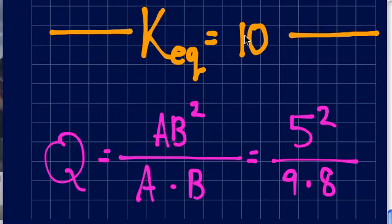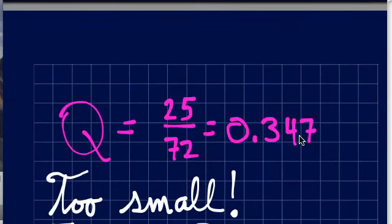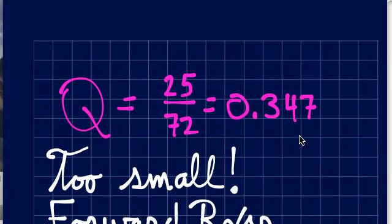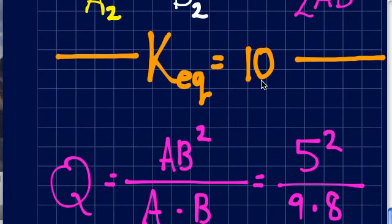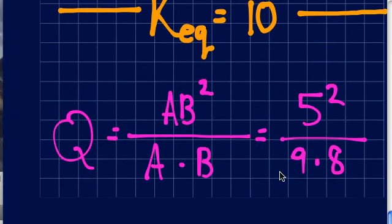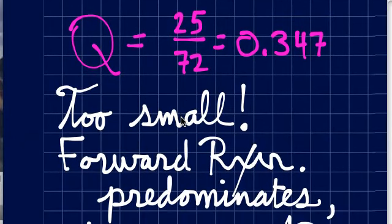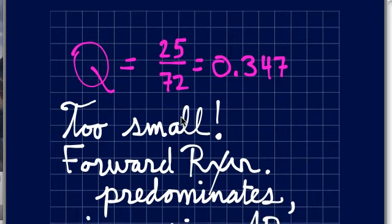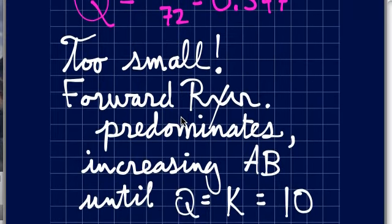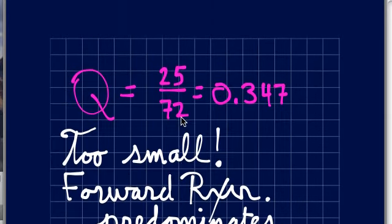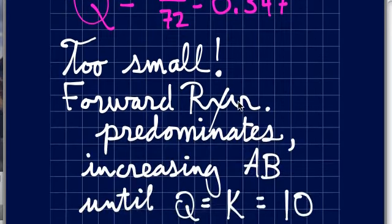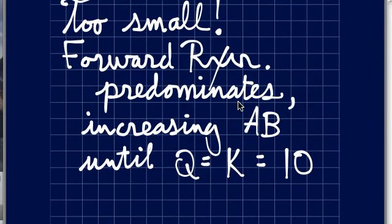So the constant is equal to this, which is also equal to this, but I'm not yet at equilibrium. So five squared is 25, nine times eight. That gives you 0.347, as compared to my constant was 10. So that means this is too small. That means this is too small and or this is too big. So if it's too small on the product side, the reaction goes forward. And as the reaction goes forward, I will form more product. And that 0.347 will grow larger and larger and larger until it equals 10.